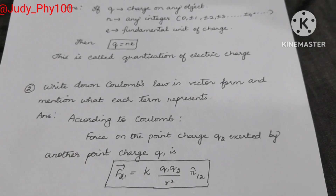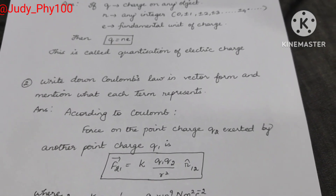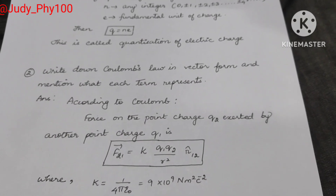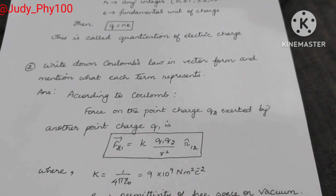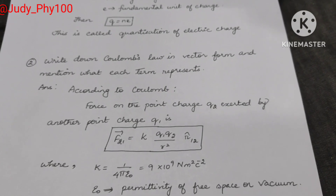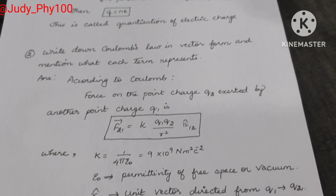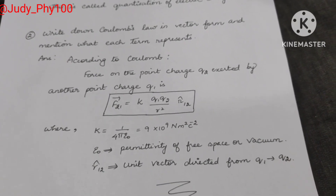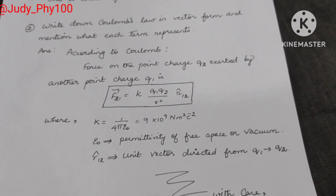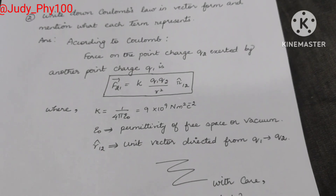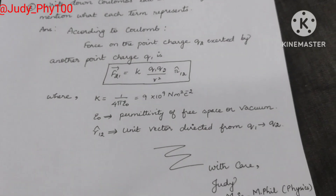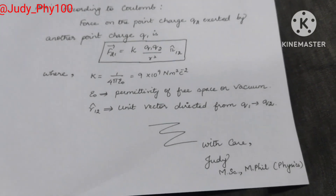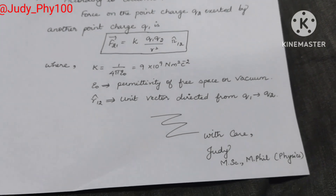Second question: write down Coulomb's law in vector form and mention what each term represents. For a system with two charges q1 and q2, the force that q1 gives to q2 is given by the formula: vector F21 is equal to k into q1 q2 by r squared, r-cap — where k is equal to 1 by 4 pi epsilon naught, with a value of 9 into 10 to the power 9 newton meter square per coulomb square.